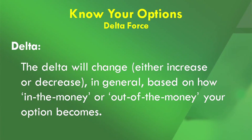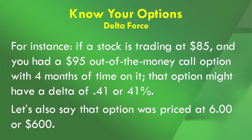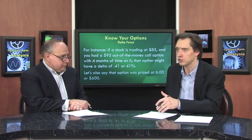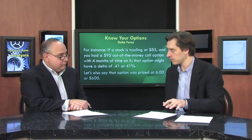Yeah, it actually is. But there is a second part to fully understanding it. The Delta will change — either increase or decrease — based on how in the money or out of the money your option becomes. For example, if a stock is trading at $85 and you had a $95 out-of-the-money call option with four months of time on it, that option might have a Delta of .41 or 41%. And let's say that option was priced at $6, which is equivalent to $600. Now if the stock increased by $10, that out-of-the-money call option with a Delta of 41% would have increased by $410.